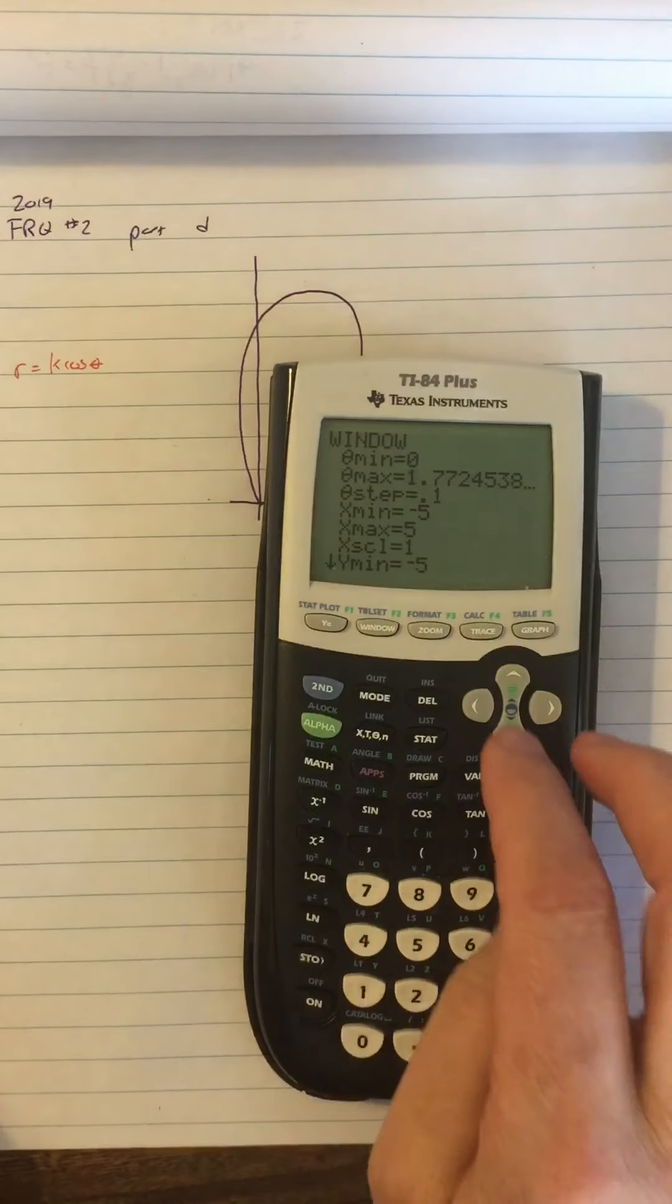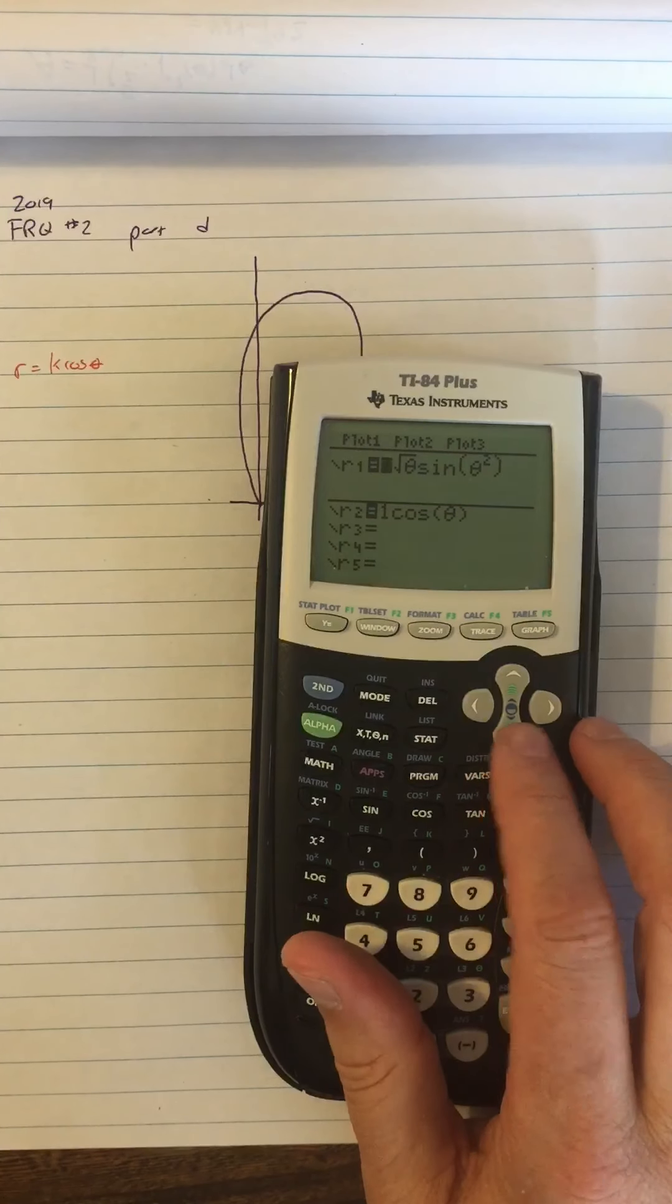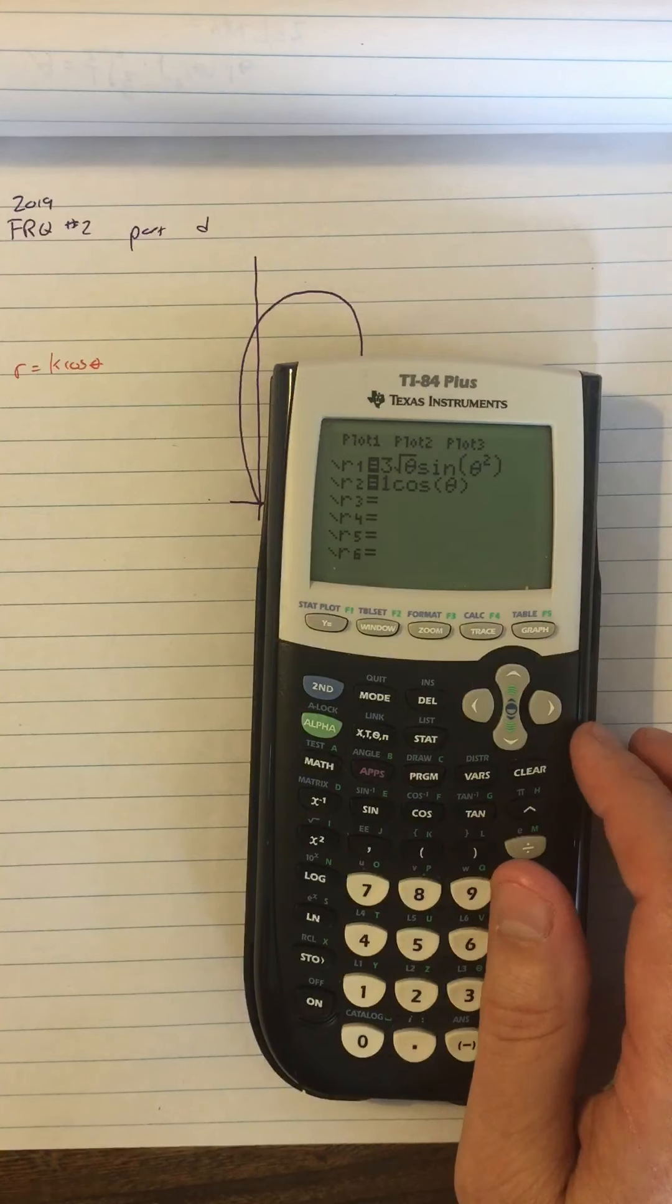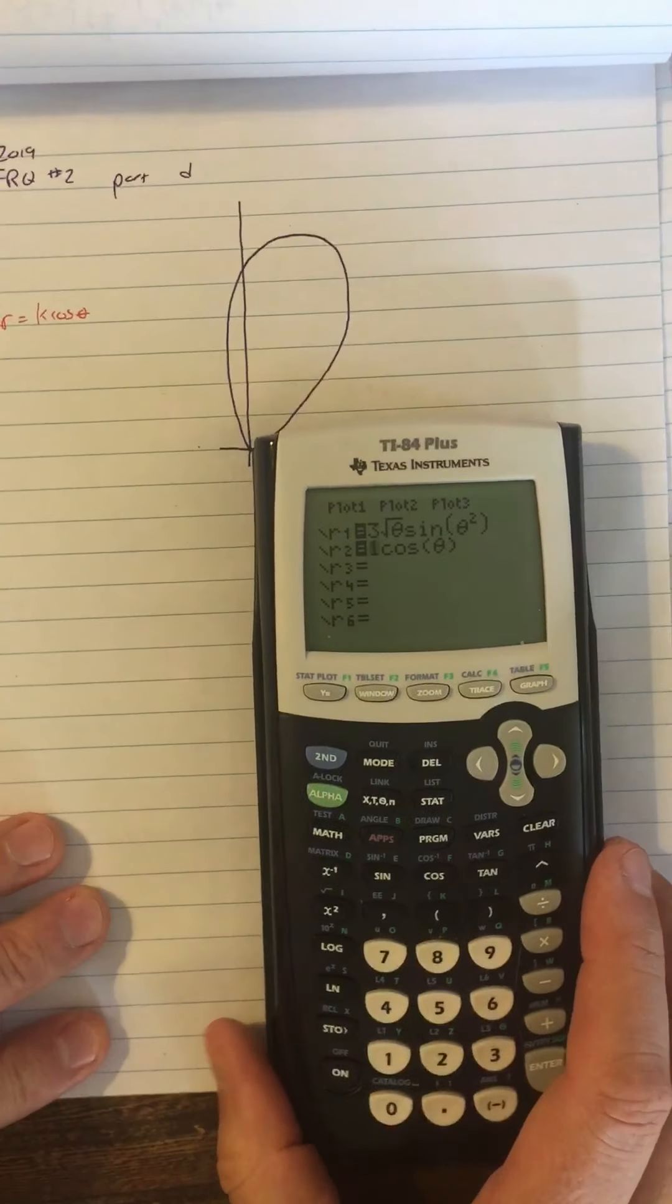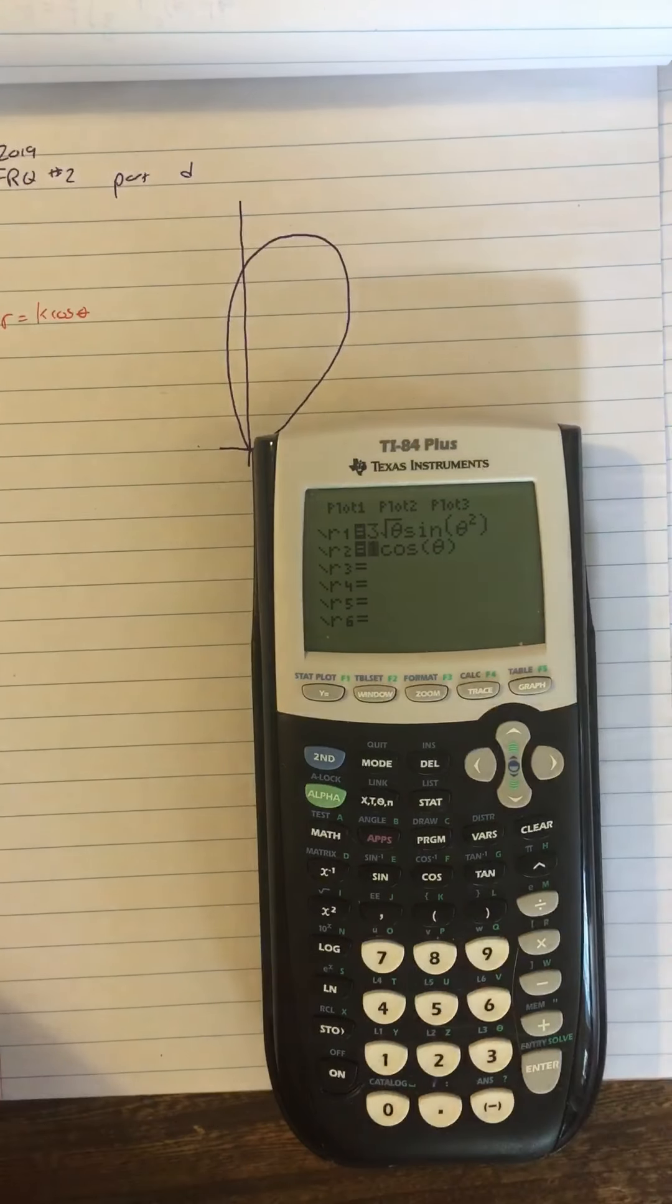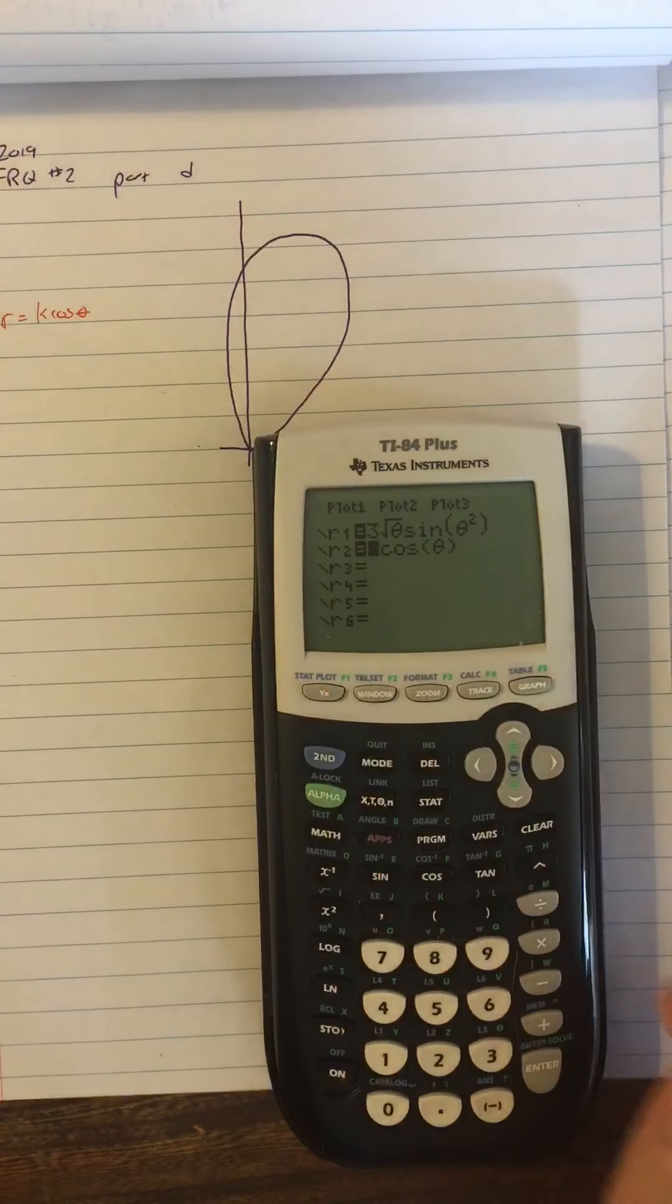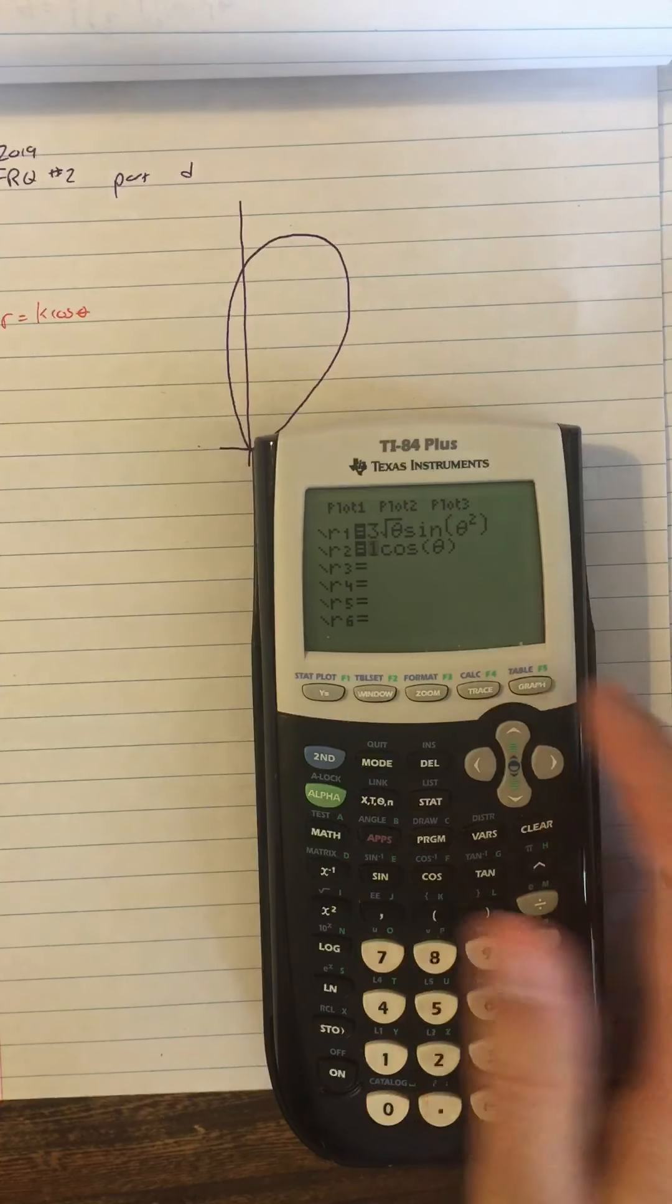So if we look at our y equals, I've gone ahead and added in one cosine theta so that way I'll be able to easily edit that to be two, three, four, because we want the limit as k approaches infinity, so we want to be able to change this k value. All right, so if I look at that graph, let's say you start with a window.